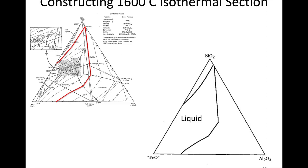We can isolate that portion and plot it over here, so we've already simplified matters by getting rid of all the other temperatures we're not interested in. When we look at this, all the temperatures in the middle region are below 1600 degrees. So if you're within these red lines at 1600 degrees, anything in that composition range would just be liquid. I've represented that as liquid because we're above all those lower temperatures.